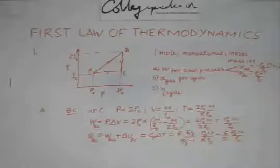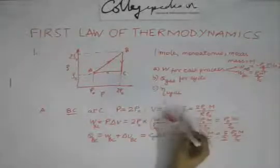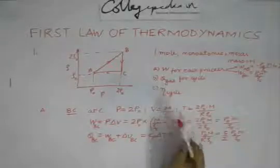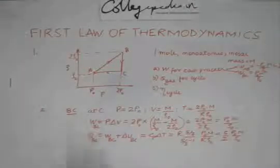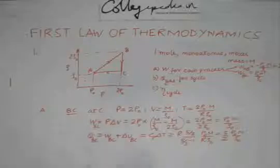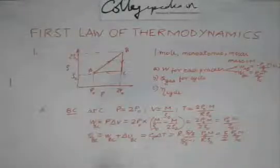The process CA is an isodensity process which is a constant density process. For a constant density, because we know that density is related to volume as N by rho, if density remains constant we can say that this isodensity process is nothing but an isochoric process.